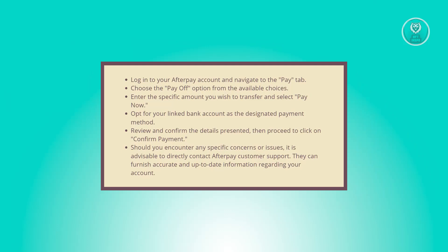There are a few steps you need to follow to make this transaction. First, sign in to your Afterpay account and go to the Pay tab. From there, select the Pay Off option from the provided selections, input the exact amount you intend to transfer, and click Pay Now. Then choose your linked bank account as the designated payment method, review the presented details, and proceed to click Confirm Payment.